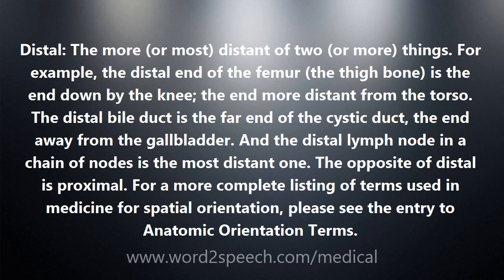For example, the distal end of the femur, the thigh bone, is the end down by the knee — the end more distant from the torso. The distal bile duct is the far end of the cystic duct, the end away from the gallbladder. And the distal lymph node in a chain of nodes is the most distant one.